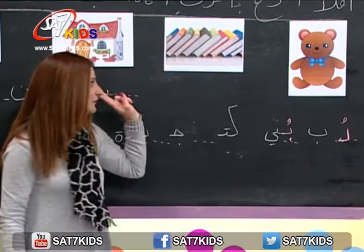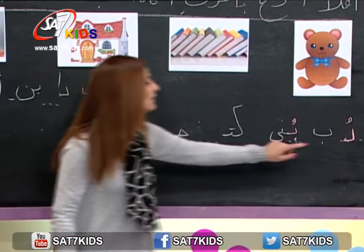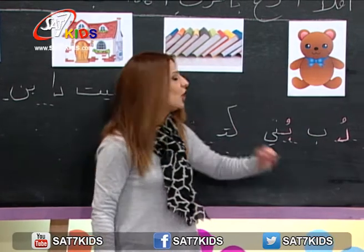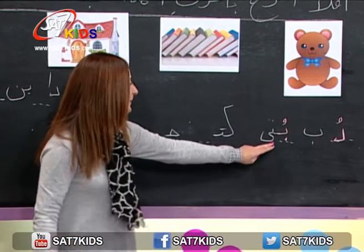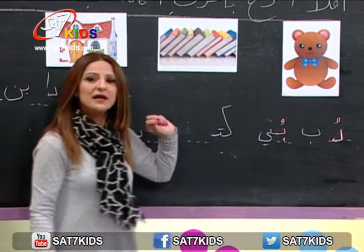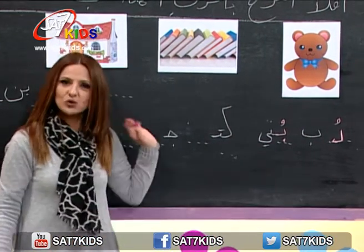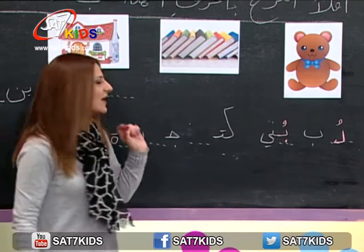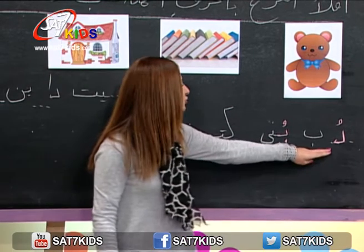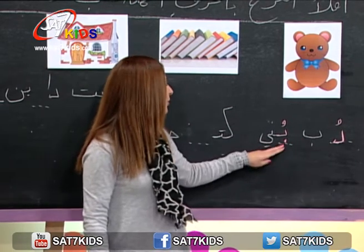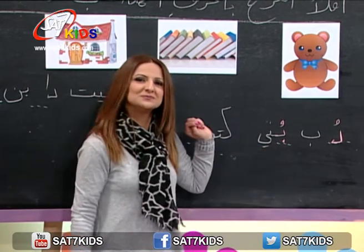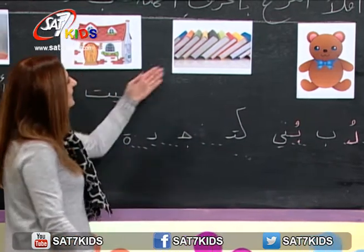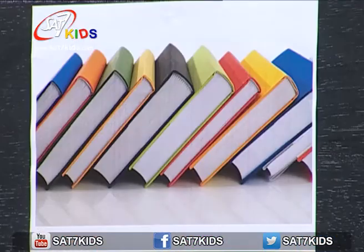هون رجعنا على حرفين: حرف الدال د وحرف الباء ب مع الصوت القصير. وصار عنا دب بني. هلأ مننتقل لتاني صورة.